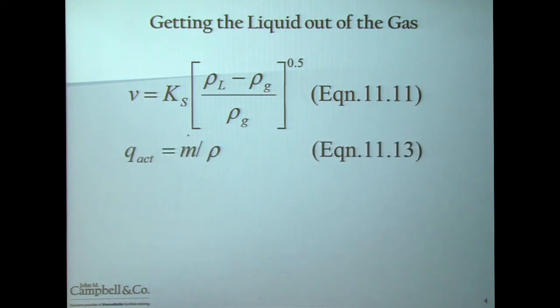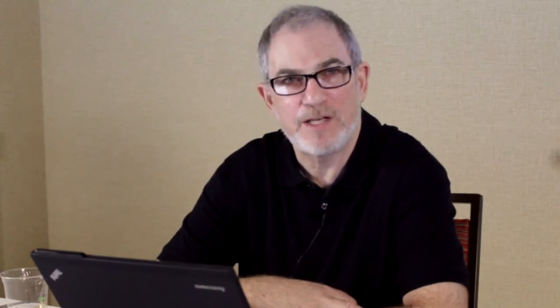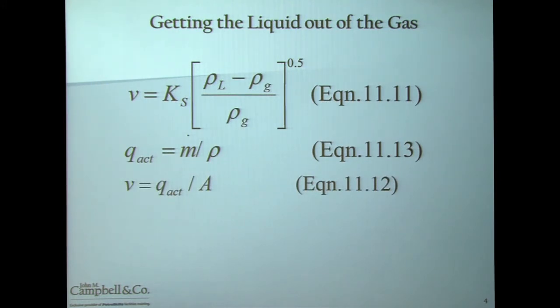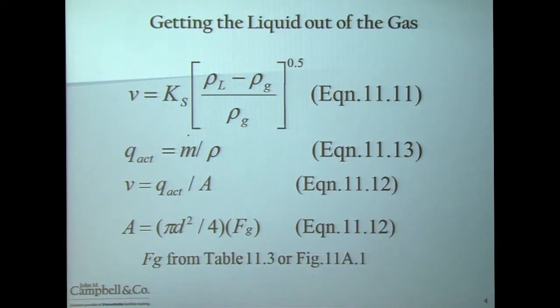Another equation you need for evaluation is a simple one to determine what your actual flow rate is. Your actual flow rate is equal to your mass flow rate divided by your gas density. Once you know your maximum velocity from equation 1111, and your actual flow rate from equation 1113, you can put the two together and figure out what the area is of your separator. Area of a vessel is equal to pi D squared over 4.